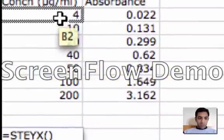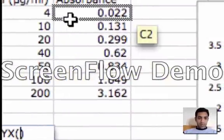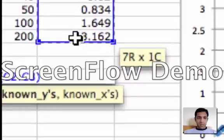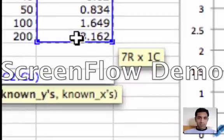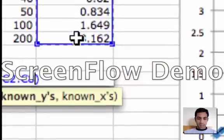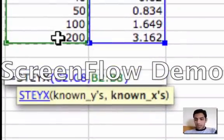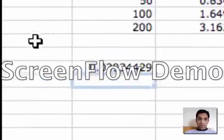Now STEYX, this particular function, it calculates the standard error from your known X's and your known Y's. So these are our known Y's because we want this on the Y axis, comma, these are our known X values. Just enter it, you get the value of STEYX.